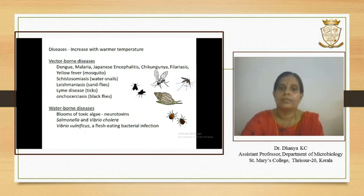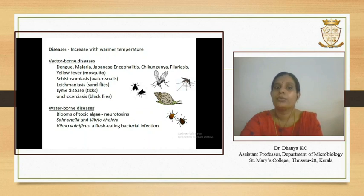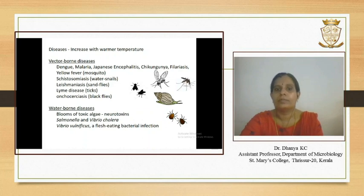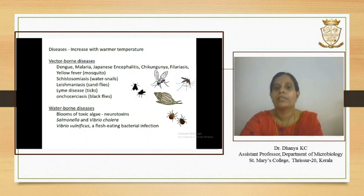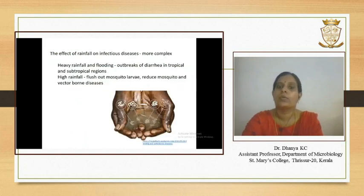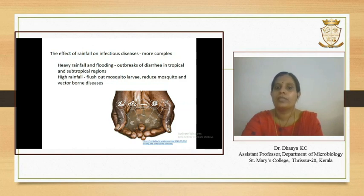Coming to water-borne infections: in the marine environment, warm temperatures create red tides or blooms of toxic algae, which increase shellfish poisoning and neurotoxins. Salmonella and cholera bacteria proliferate more rapidly at higher temperatures — Salmonella in animal gut and food, while cholera in water. Recent reports showed that Vibrio vulnificus, a flesh-eating bacterial infection spread by handling or eating contaminated seafood, is linked to significant increases in sea surface temperatures. The effect of rainfall on infectious diseases is more complex; in tropical and subtropical regions, heavy rainfall and flooding may trigger outbreaks of diarrhea, whereas very high rainfall can flush out mosquito larvae, thereby reducing vector-borne diseases.